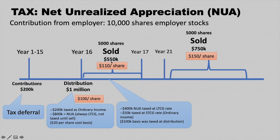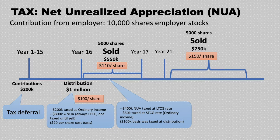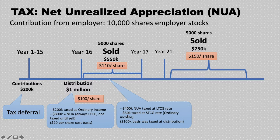The additional $10 per share appreciation above the $100 distribution price — on 5,000 shares — gives $50,000, which is taxed as a short-term capital gain because he held less than one year. Since he had a $100,000 basis in those 5,000 shares, and received $550,000 total, only $450,000 is taxable. That's the tax implication for selling within one year.